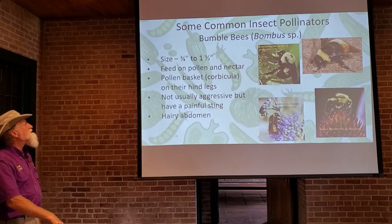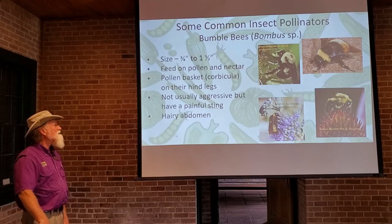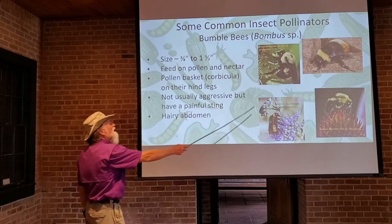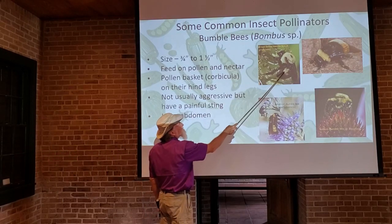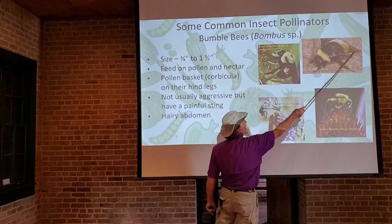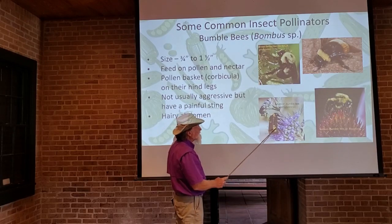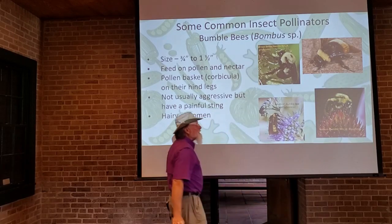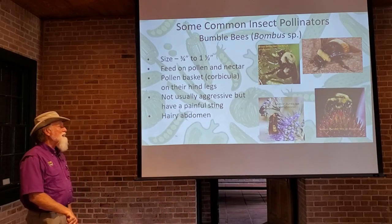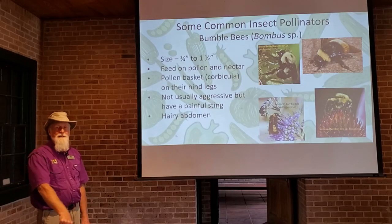There are two types of carpenter bees — large and small. They all bore into wood or soft pithy stems, where they lay their eggs and develop their larvae. Their primary food is pollen and nectar. One way to tell carpenter bees from bumble bees: the carpenter bee has a smooth abdomen with no hairs. Bumble bees can be anywhere from three-quarters to one and a half inches long, feed on pollen and nectar, have pollen baskets, and have a hairy abdomen.